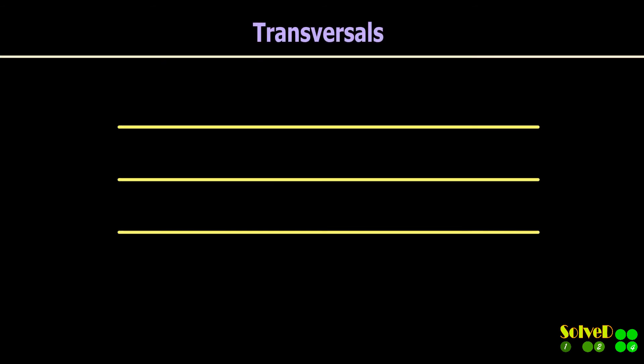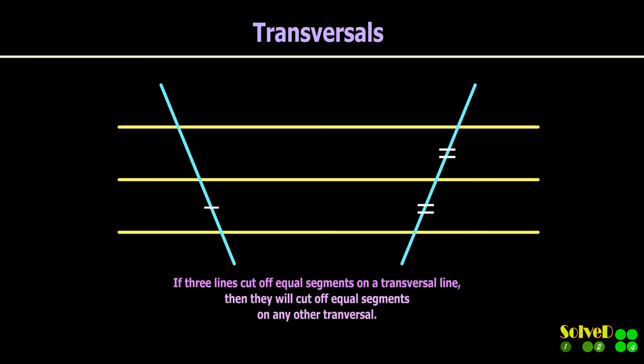If three parallel lines cut off equal segments on some transversal line, then these parallel lines will cut off equal segments on any other transversal.